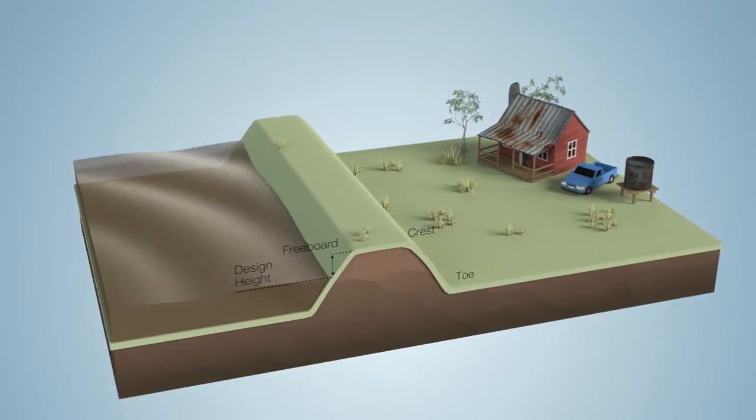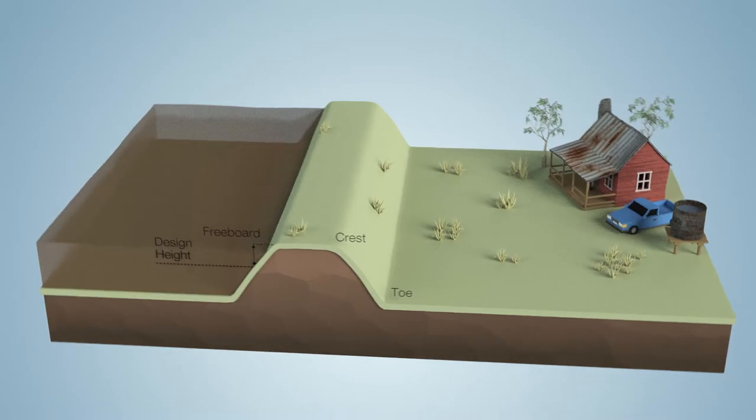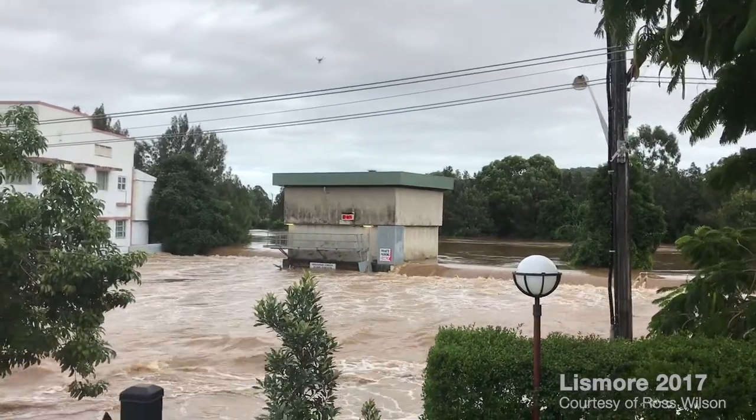This means the area behind the levee could be at risk of flooding before the water reaches the crest or starts to flow over the top.